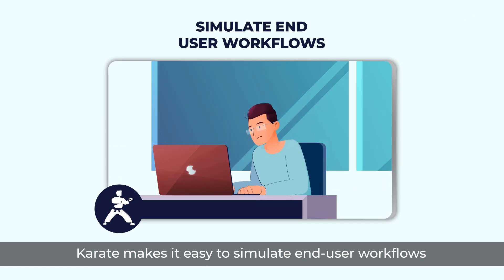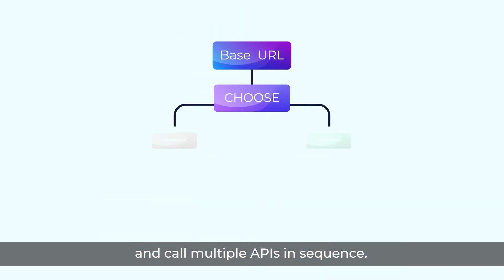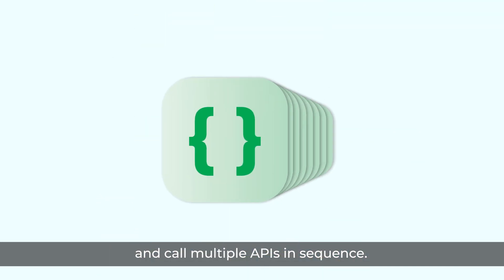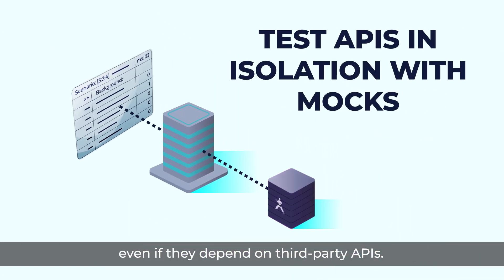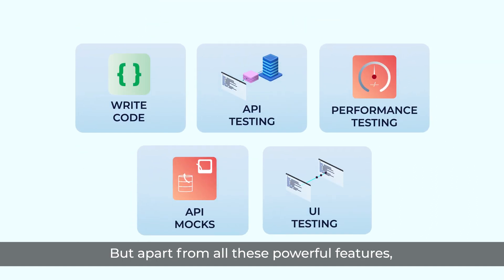Karate makes it easy to simulate end-user workflows and call multiple APIs in sequence. With built-in API mocking, you can test APIs in isolation, even if they depend on third-party APIs. But apart from all these powerful features, what makes Karate truly special is the ease of adoption in organizations of all sizes.